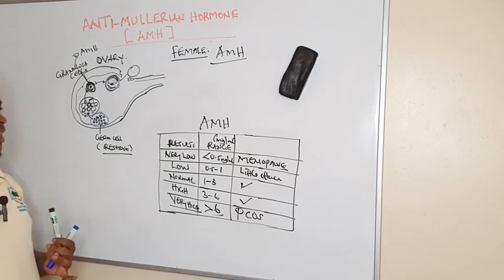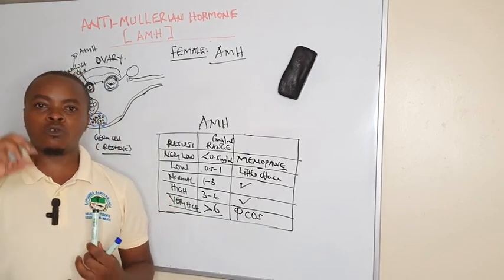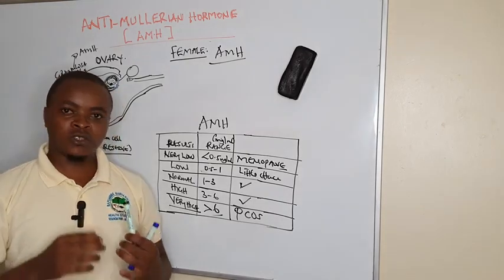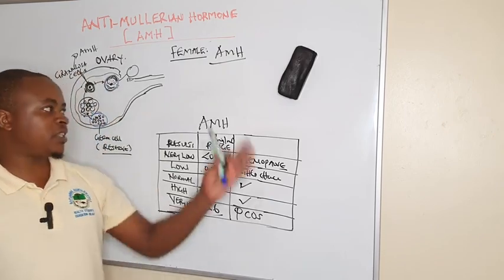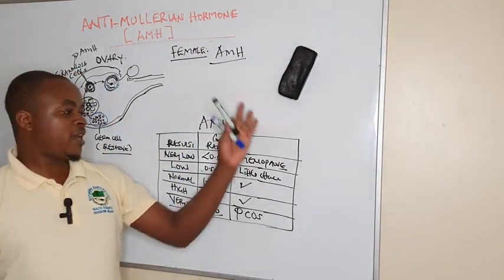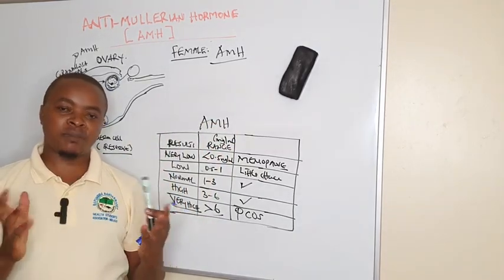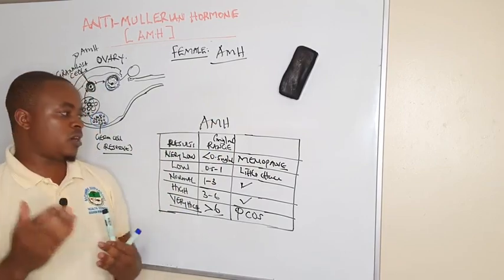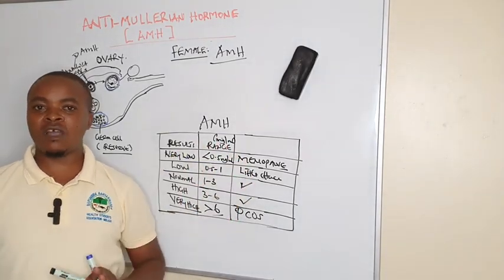The two things we can use anti-mullerian hormones for is to detect the egg reserves or to rule out polycystic ovarian syndrome. You can always utilize this in case you have friends who are facing a challenge of producing, experiencing prolonged menses not coming out, or taking long without getting pregnant.